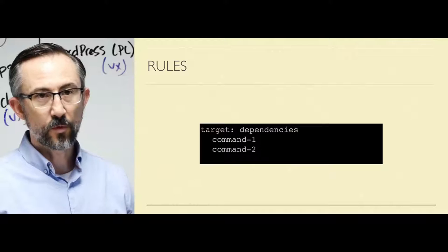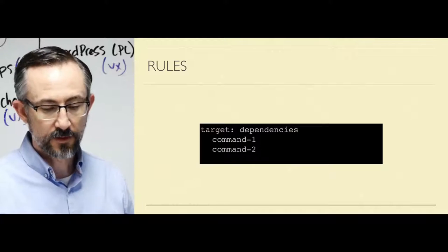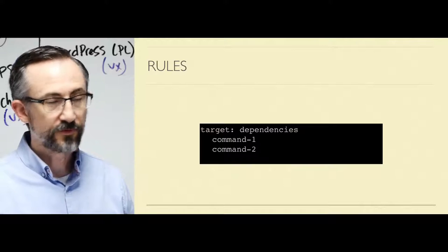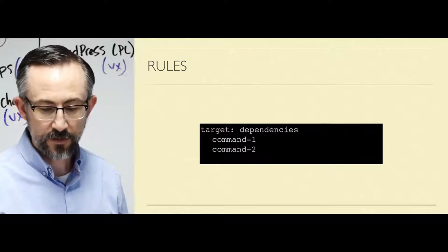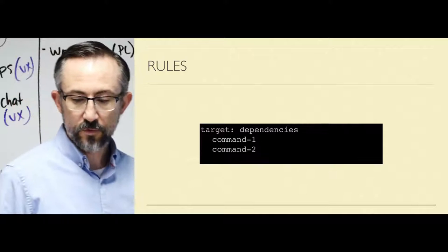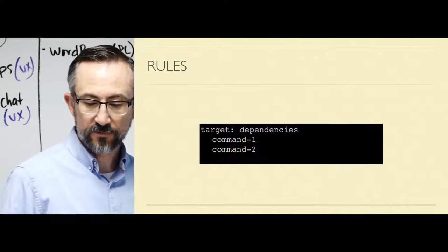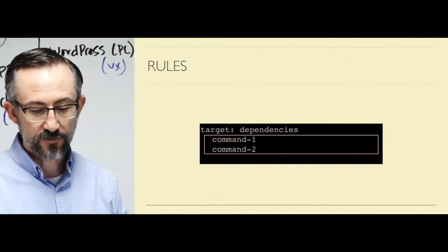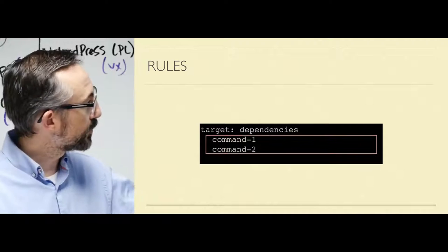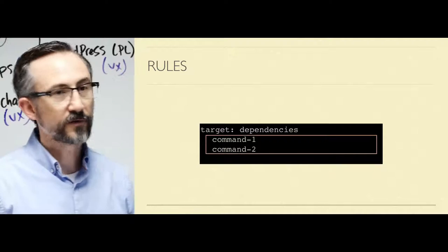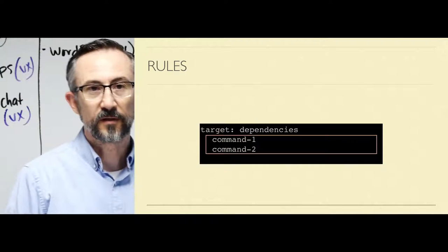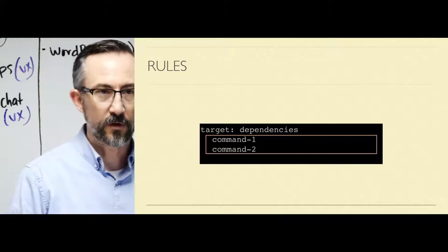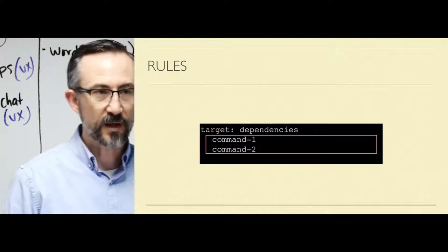Rules can have one or more targets, and a target may have zero or more dependencies. Rules also have zero or more commands — that's these down here. That little box there is called the recipe. Or sometimes in the GNU Make source code, it's called the command set.